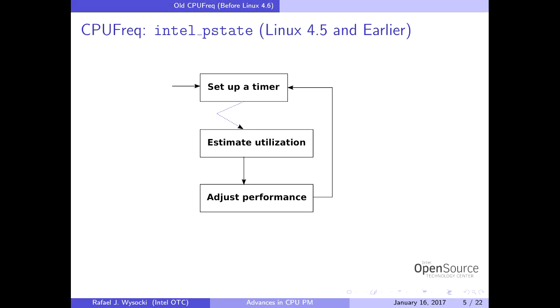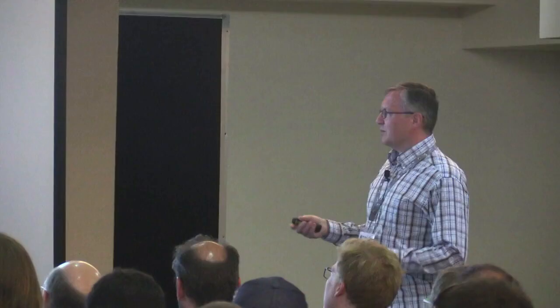There was a timer per CPU that would fire every, say, 10 milliseconds or so. There are a number of problems with this. The first problem is the timer itself — I'll get back to that later. The second is that this was not aligned with anything the scheduler did.